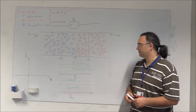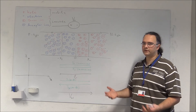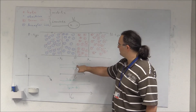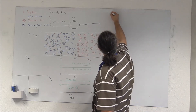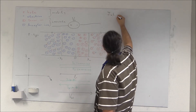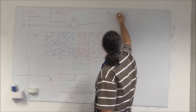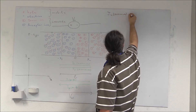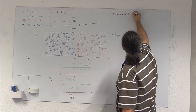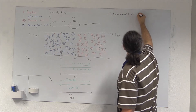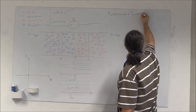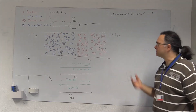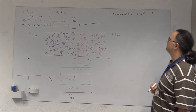Because in thermal equilibrium we don't have a net current through the PN junction, I can write that the diffusion current due to electrons plus the drift current due to electrons is equal to zero. This is the condition for thermal equilibrium.